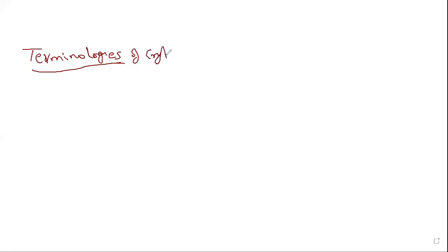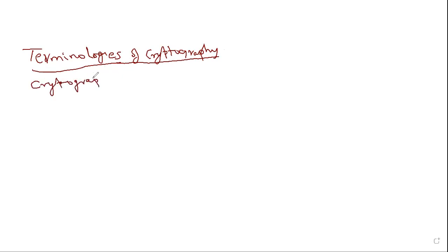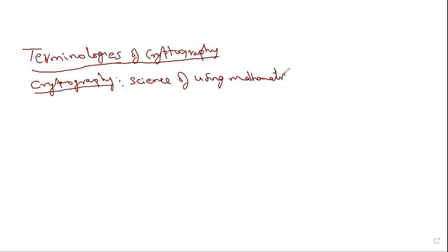First we will see what is cryptography. Cryptography is a science — because without science and mathematics we cannot do anything. Cryptography is a science of using mathematics. I will tell you why mathematics is used here: almost all cryptographic algorithms involve mathematical computations.